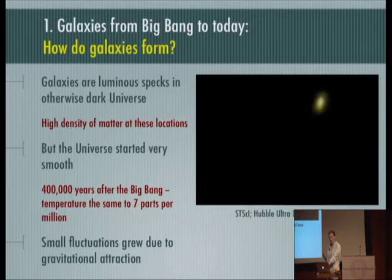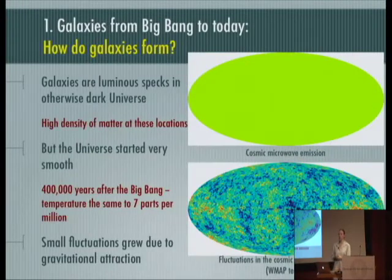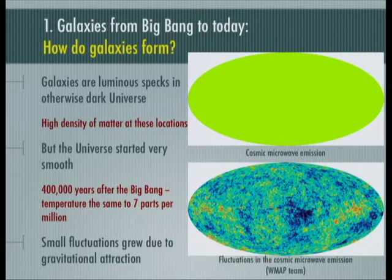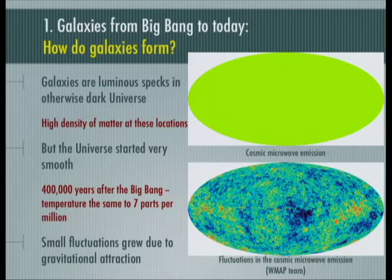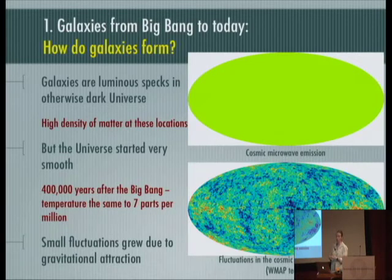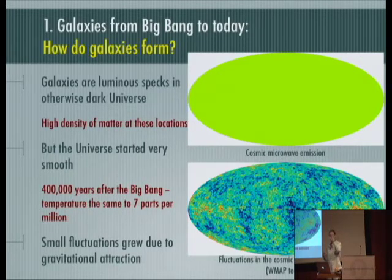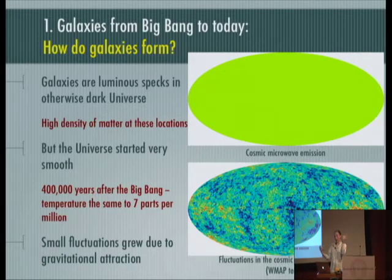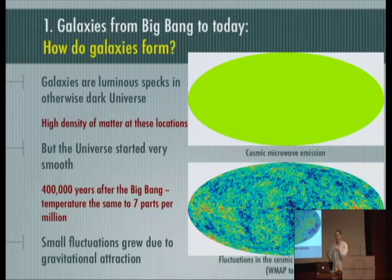The universe today is highly inhomogeneous — dense regions populated by luminous galaxies — but after the Big Bang, the universe started very smooth. We know this from observations of the cosmic microwave background, an echo of the Big Bang produced only 400,000 years after it. If you look at cosmic microwave emission, you see something very smooth. When you subtract that smooth emission you reveal small fluctuations — to the tune of a few parts per million. Shortly after the Big Bang, the universe was smooth with just slight density fluctuations: some parts slightly more dense, others slightly underdense. Gravity then works on those fluctuations, collapsing overdensities and emptying underdensities.